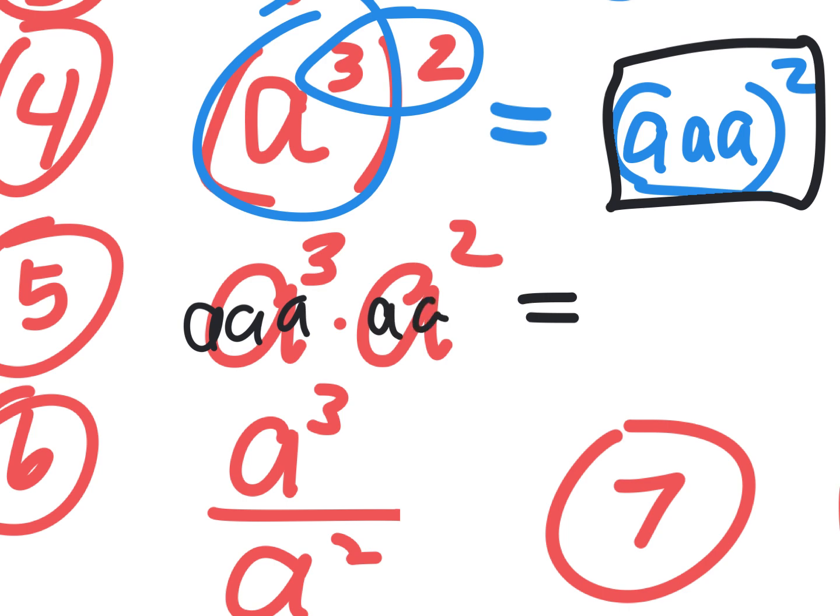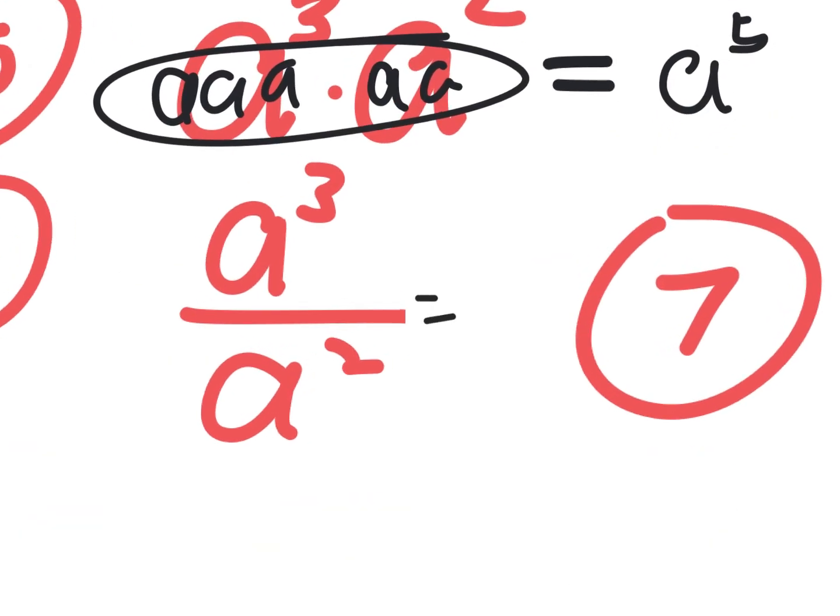This kind, write out what it means. This means A, A, A. And this means A, A. You're not going to look at that and think six. You're going to look at that and think A to the fifth. The next one. This kind, you subtract the top minus the bottom. So that's three minus two, which is one.